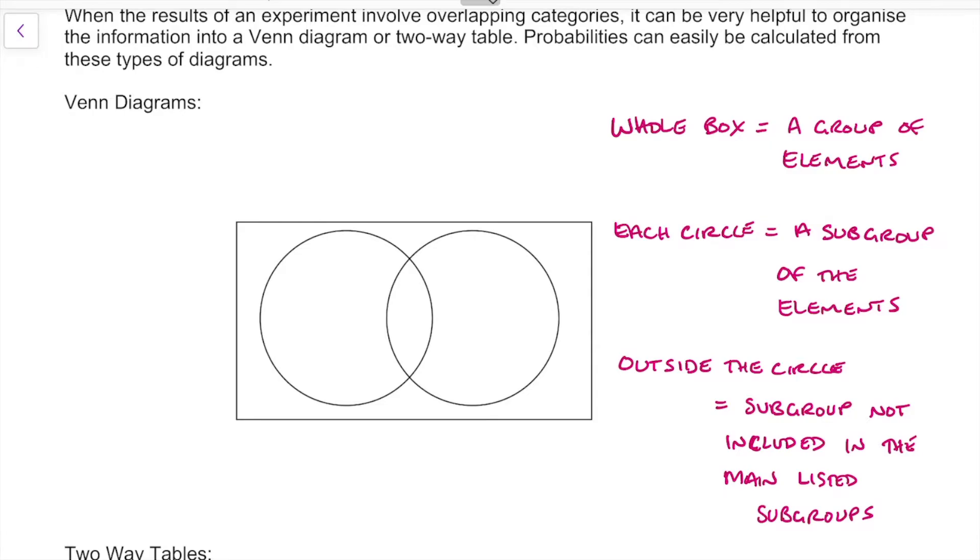So let's use this Venn diagram now to display an example of what Venn diagrams look like. Let's say we have a group of 100 people and that's going to be represented by this diagram.